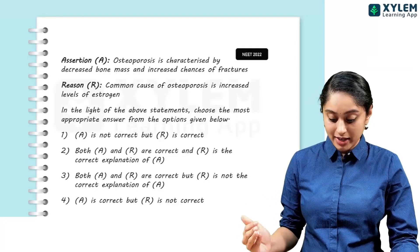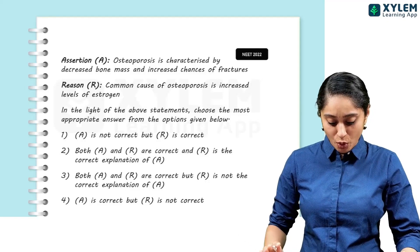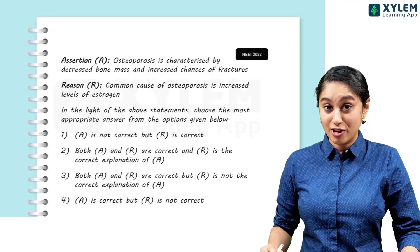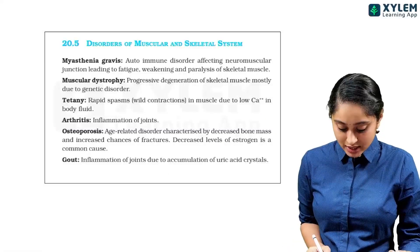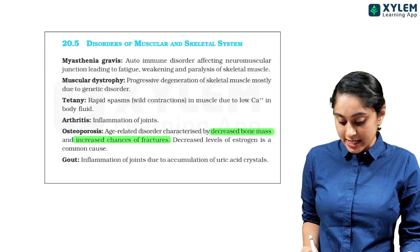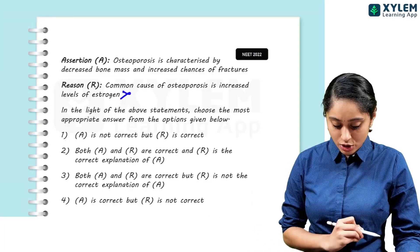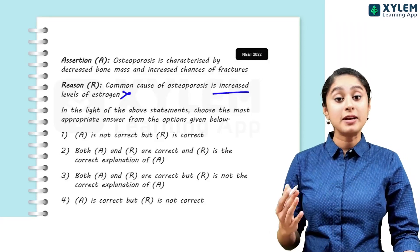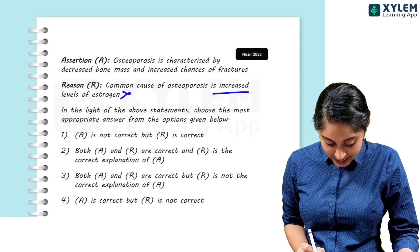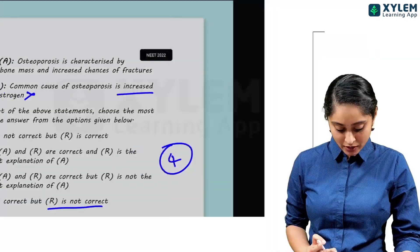NEET 22 question - assertion and reasoning. Osteoporosis is characterized by decreased bone mass, increased chances of fractures. Reason: common cause of osteoporosis is increased level of estrogen. But if you see here, osteoporosis - yes, there is decreased bone mass, increased chances of fractures, but decreased level of estrogen is a common cause. So reason is wrong because it says increased level of estrogen. Here my assertion A is correct, but R is incorrect. Option 4 will be the right answer.